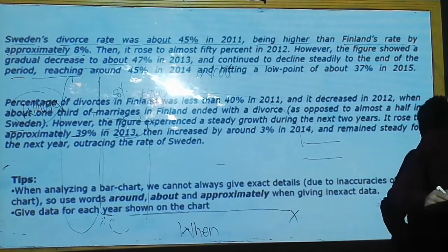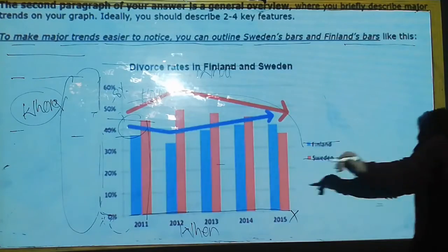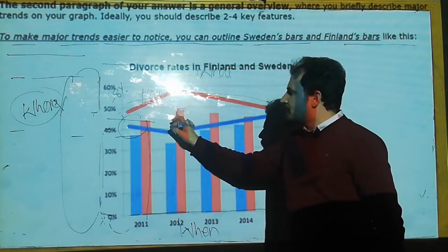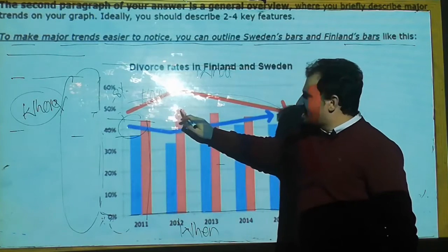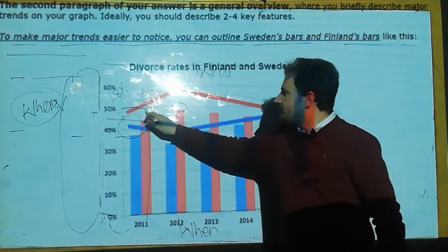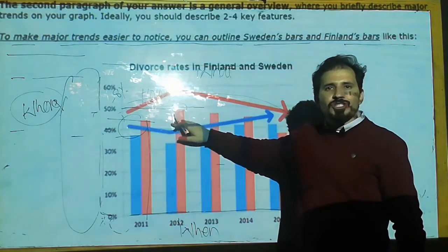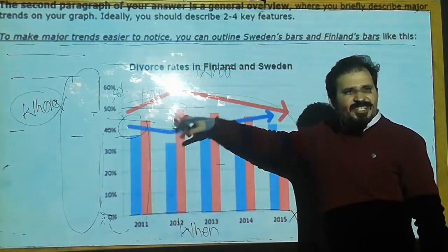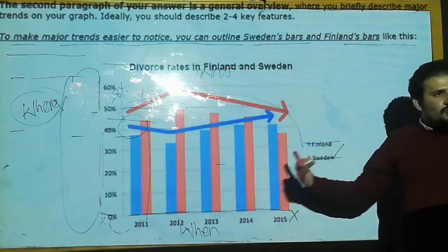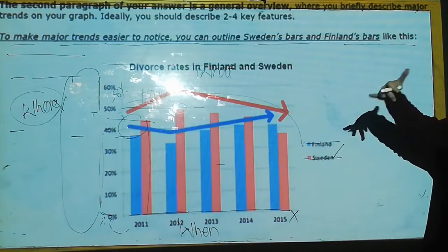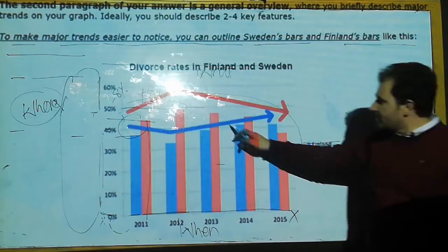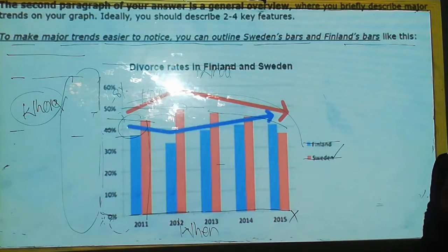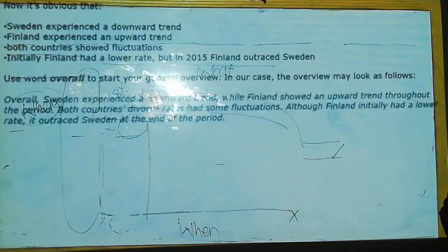Then it rose to almost 50% in 2012. In 2012, we are talking about Sweden — it reached just below 50%. So the divorce rate in Sweden in 2012 is the highest. As compared to all other years, this is the highest part, reaching just below 50%.